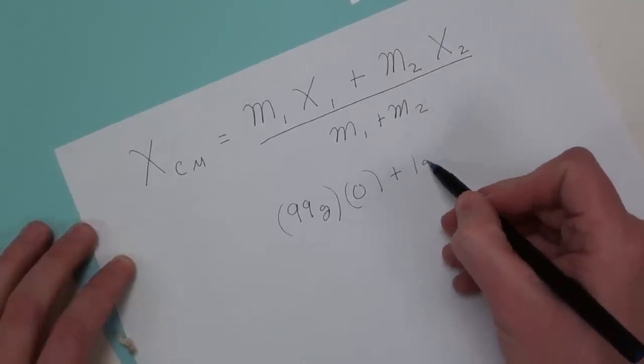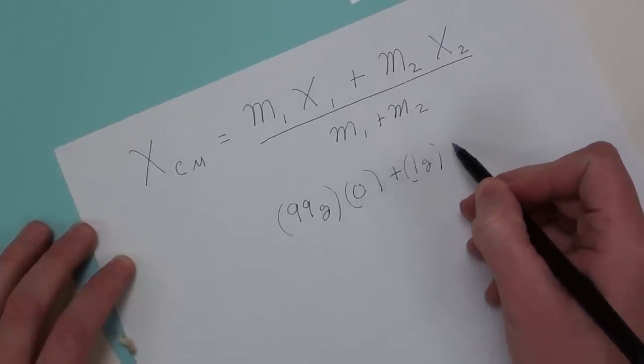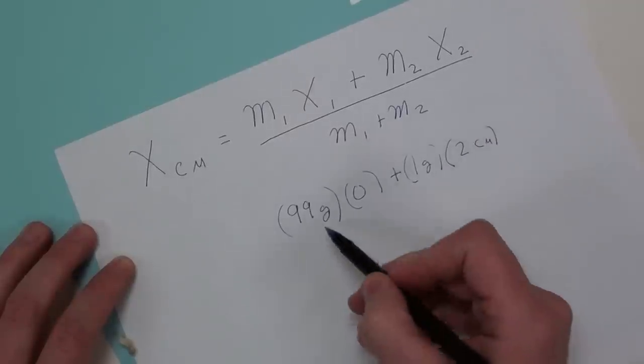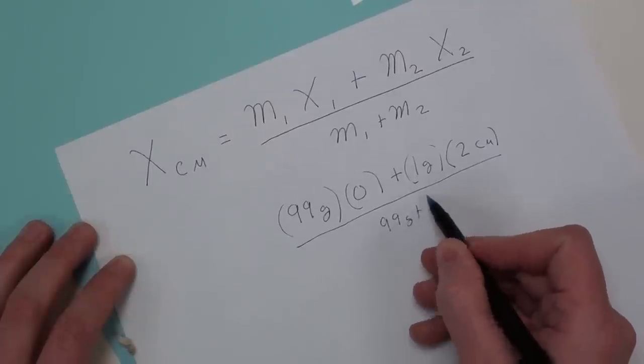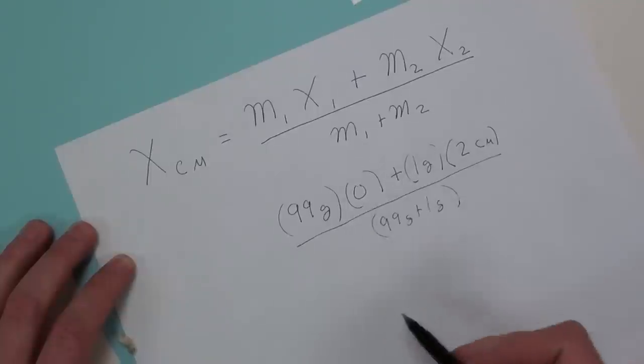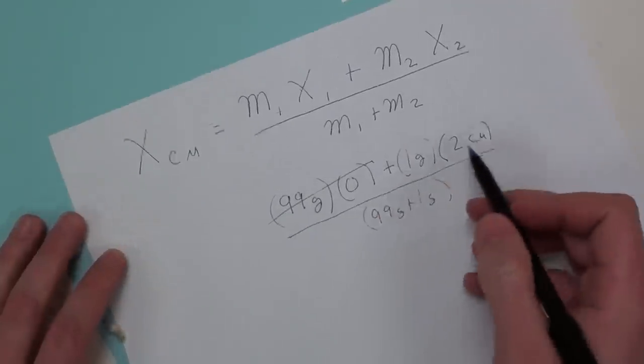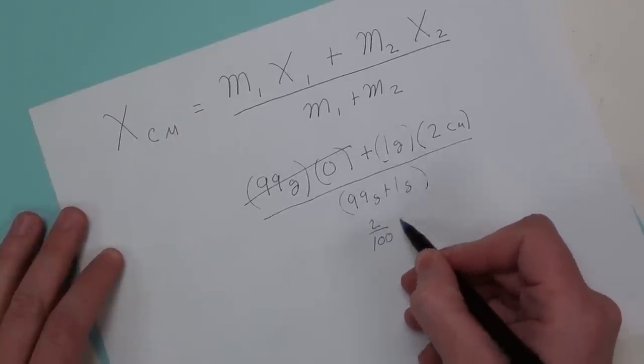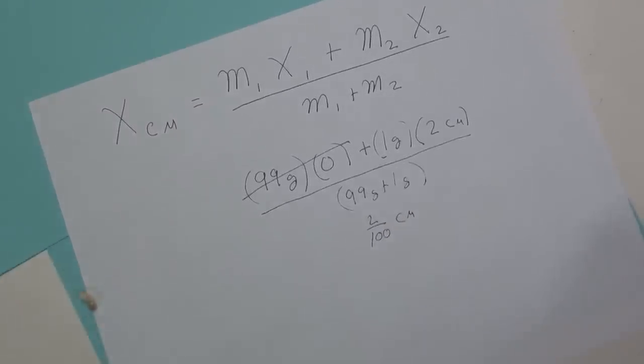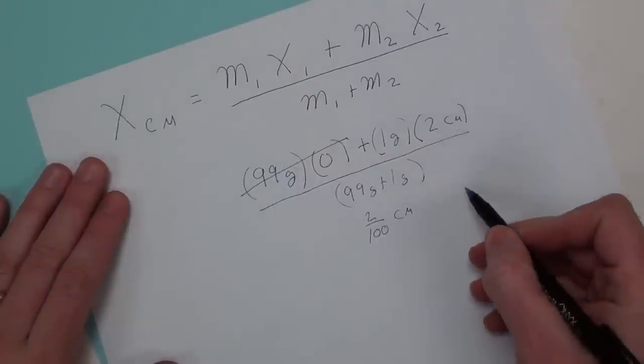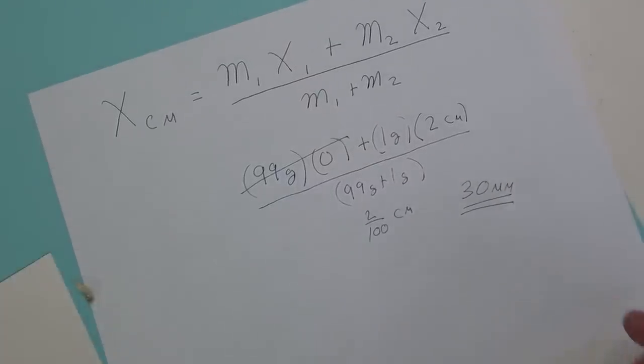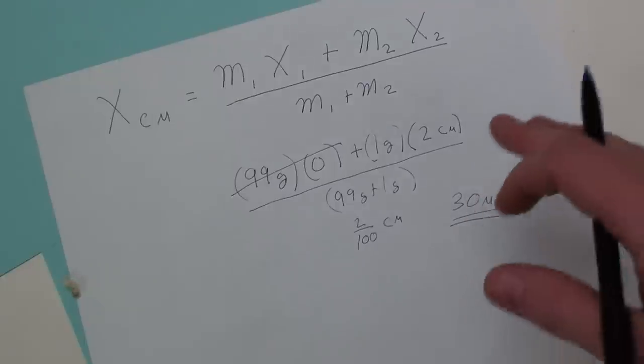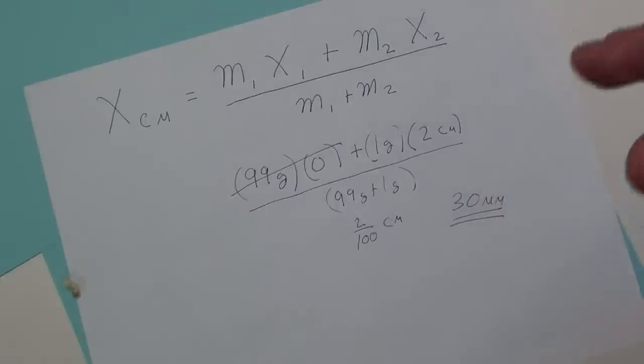Now when we burn the toothpick, we're only going to shift that length by half the toothpick's length. So let's say that's 1 gram, even though it's not even that much, and let's say that that changes it 2 centimeters, which frankly I don't think it changes it that much. We're going to have to divide that by 99 grams plus 1 gram. That's going to give us a shift of 2 one-hundredths of a centimeter. That's 0.2 millimeters. Now just for scale, I measured the glass and the glass is about 30 millimeters across. It's not enough to actually take it off of the glass.